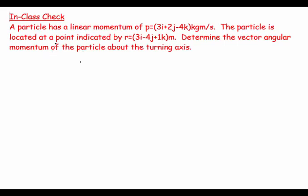Welcome. This question says a particle has a linear momentum of 3i plus 2j minus 4k kilogram meters per second. The particle is located at a point indicated by r equals 3i minus 4j plus 1k meters. Determine the vector angular momentum of the particle about the turning axis.